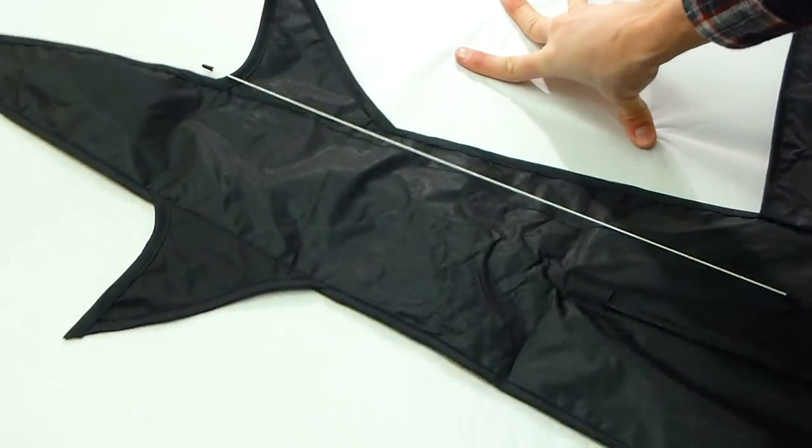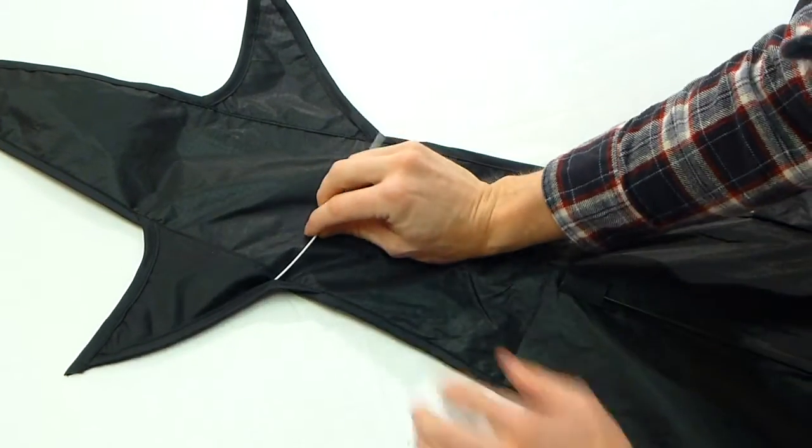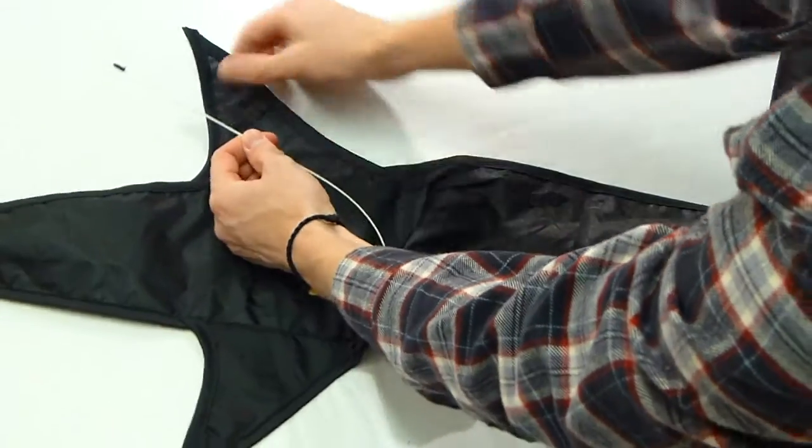Finally, we are going to repeat what we did with the white spar in the head with the shorter white pieces down at the tail. Find the gaps and slide it in.